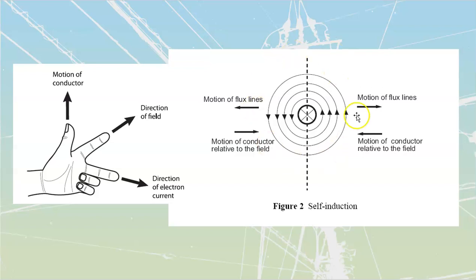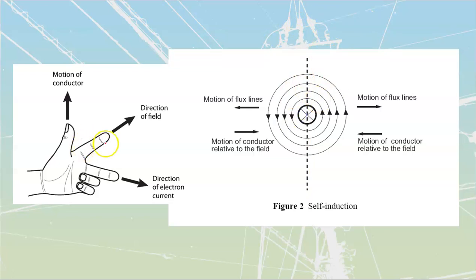Let's take a look at this drawing. I've put up a left-hand rule picture right beside it because we're going to use the left-hand rule to analyze this. We've got a dotted line drawn down the center — the reason for that is just to delineate one side versus the other. It's really hard to think in a full 360-degree circle; it's much easier for our minds to analyze only one half at a time. It operates the same all the way around.